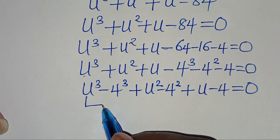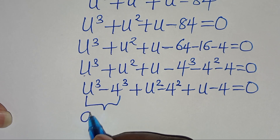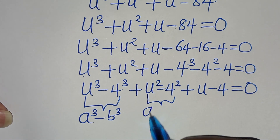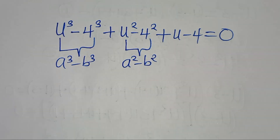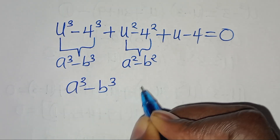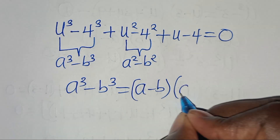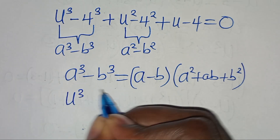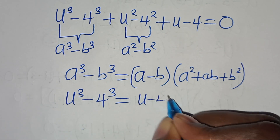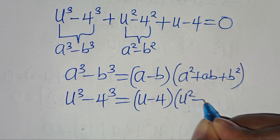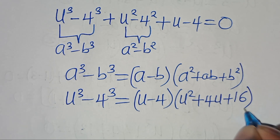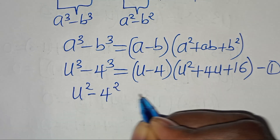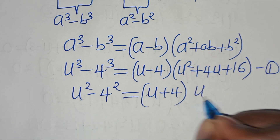The first part is the difference of two cubes: a³ minus b³. The second part is the difference of perfect squares: a² minus b². We have the identity a³ minus b³ equals (a minus b)(a² plus ab plus b²). Applying this, u³ minus 4³ becomes (u minus 4)(u² plus 4u plus 16). And u² minus 4² becomes (u plus 4)(u minus 4).